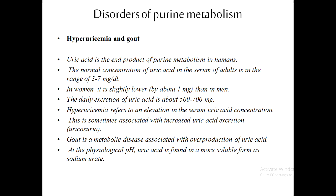Uric acid is a product of purine metabolism. The normal concentration is 3 to 7 mg per dL; for women it is considered slightly lower. Uric acid is excreted at 500 to 700 mg daily. Hyperuricemia means elevated serum uric acid concentration, and it can sometimes be associated with uricosuria.